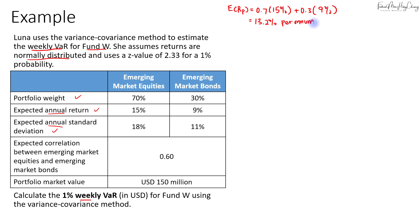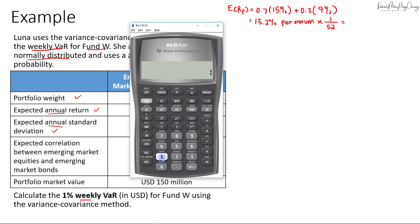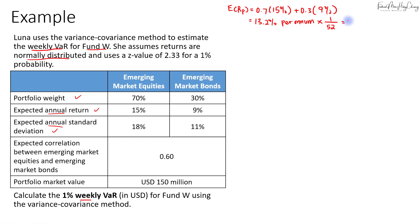We'll need to scale this from per year to per week based on the VaR requirement. One year is 52 weeks, so we'll multiply by 1 over 52. That gives us 13.2 divided by 52, which equals 0.2538% per week.